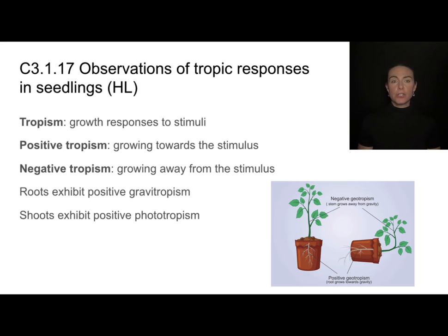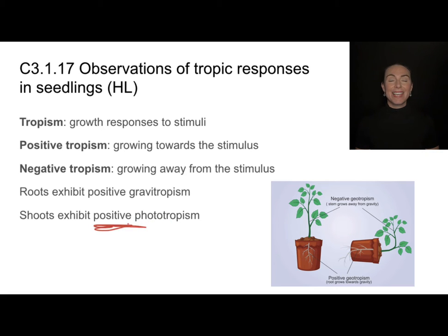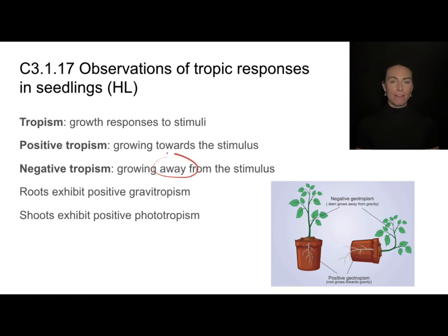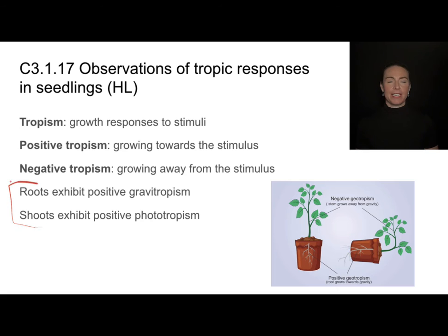Similarly, shoots are also going to exhibit positive tropism, but they exhibit positive phototropism — they're growing in the same direction as light. There are some negative tropisms, which involve growing away from the stimulus, but we'll focus most of our attention on the positive tropisms exhibited by roots and shoots.